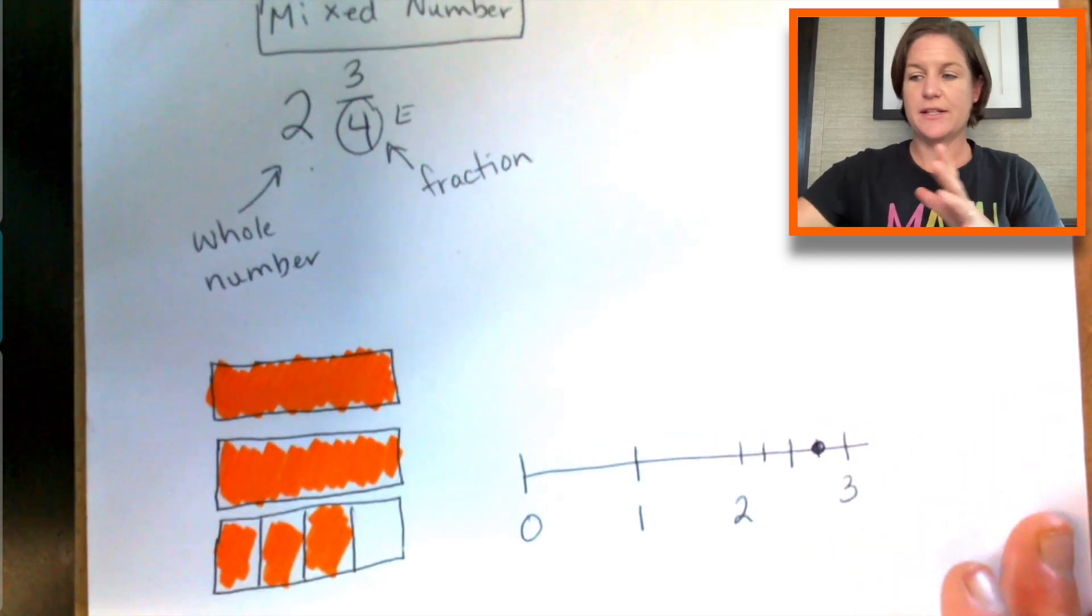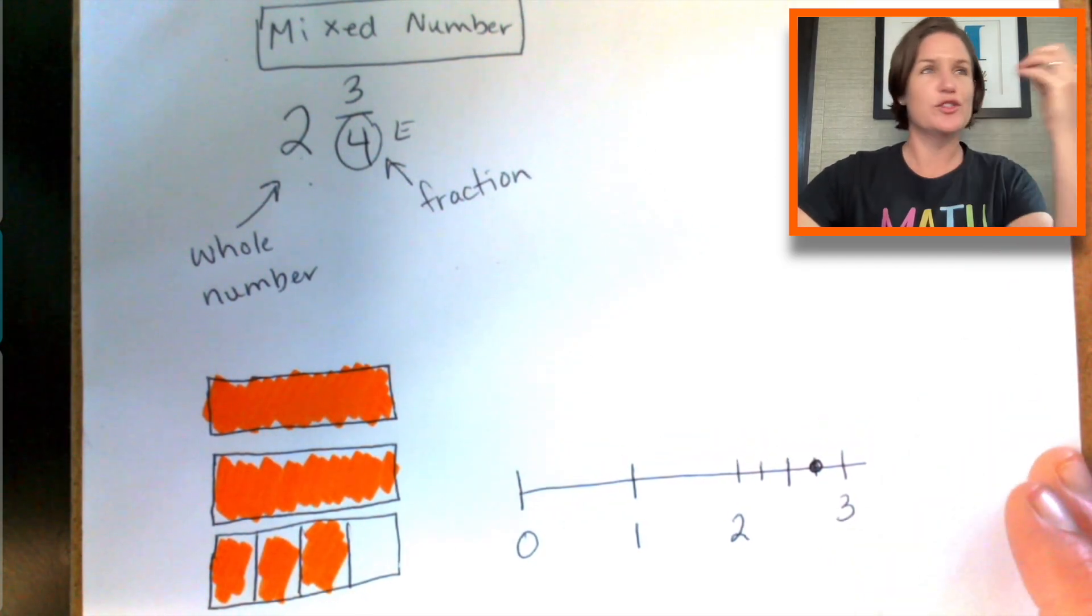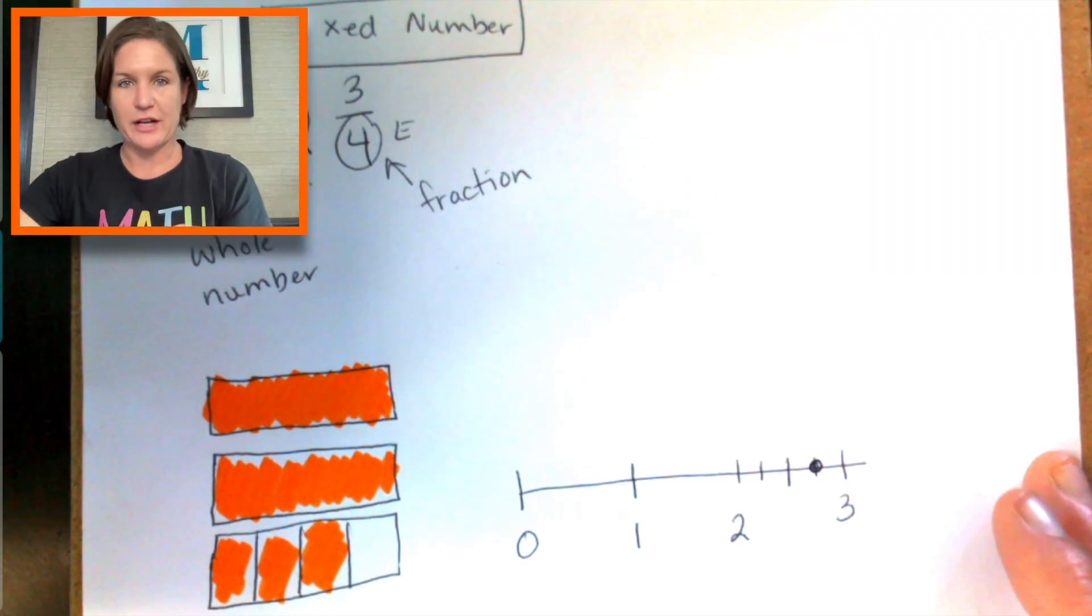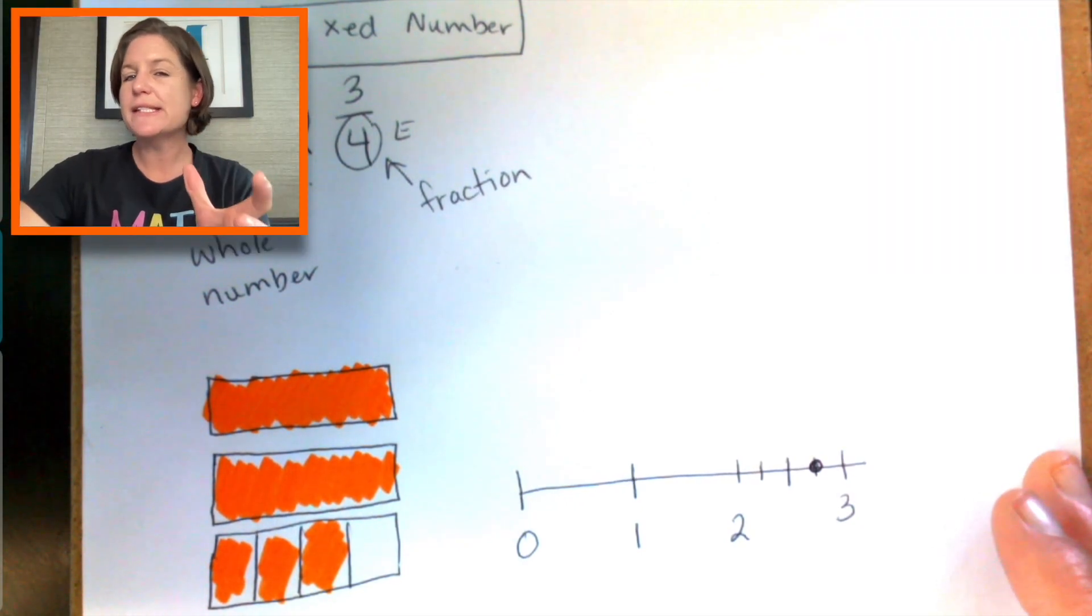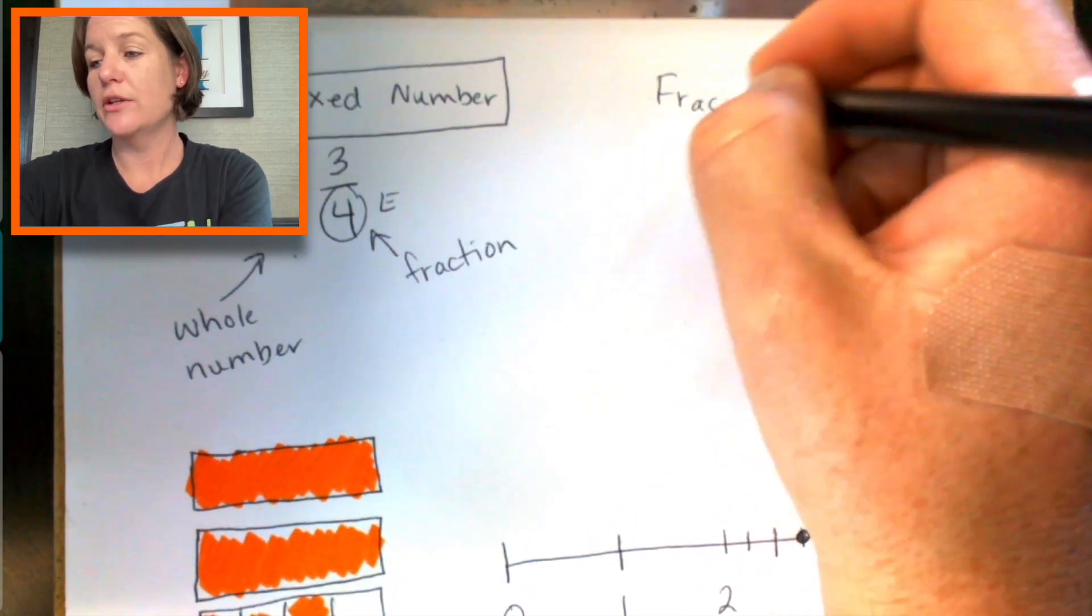Now that was the mixed number. There's another one. Students can kind of understand that, two wholes and then a fraction, they understand that. But what kind of gets them is what we call a fraction greater than one.